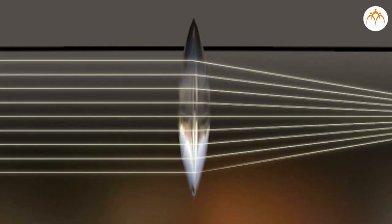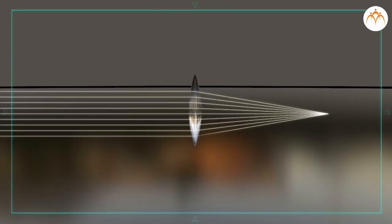A convex lens is thick in the middle and thin at upper and lower edges. It is a converging lens.